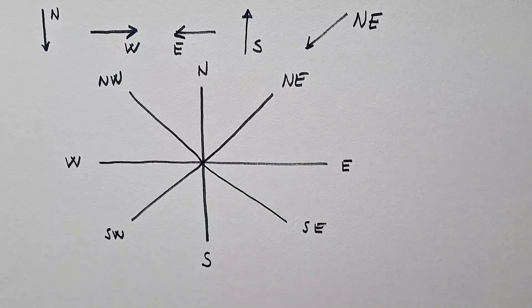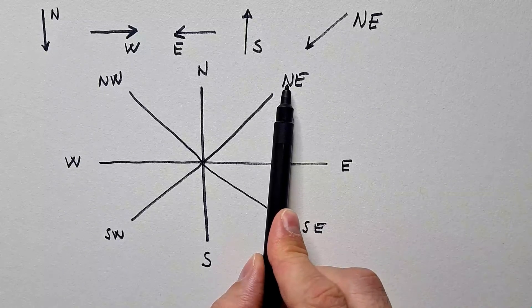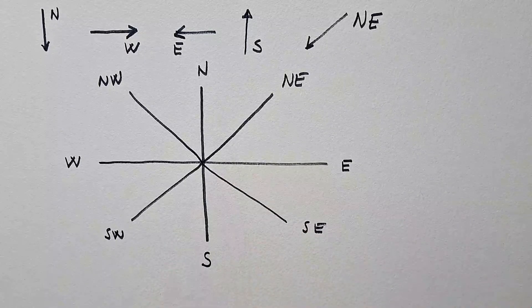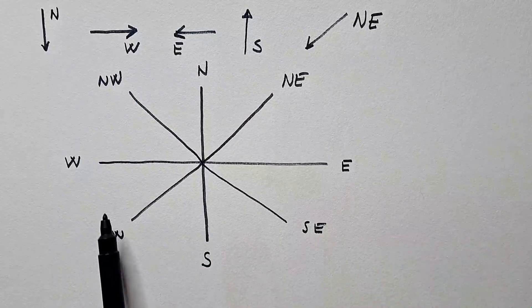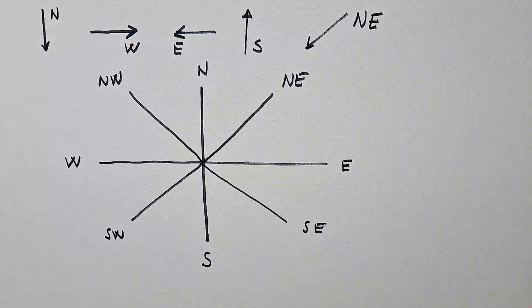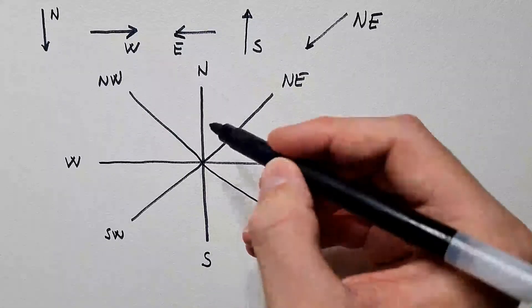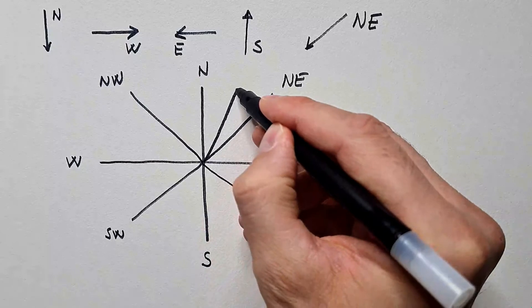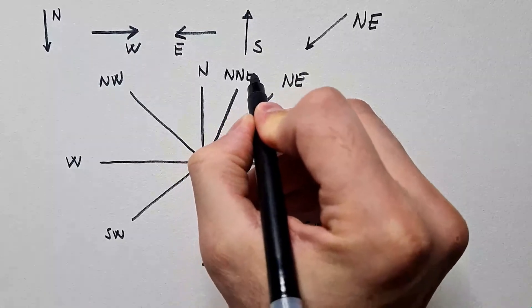Notice that, by definition, we give the first part of the name in respect to north and south wind directions. So, it's not east-north wind, but northeast. And it's not west-south, but southwest. Now, between, for example, northeast and north, we will have what we call north-north-east.